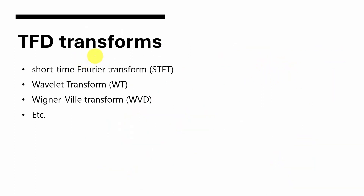There are many time-frequency domain transforms available. The most common types are short-time Fourier transform, wavelet transform, and Wigner-Ville transform. Nowadays people are using CWT — continuous wavelet transform — and Q-transforms. There are plenty of transforms available, and each transform will increase the effectiveness of fault identification.